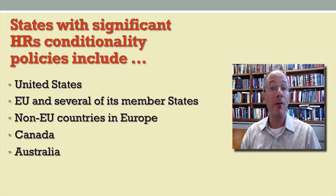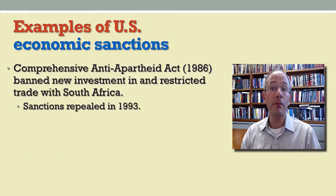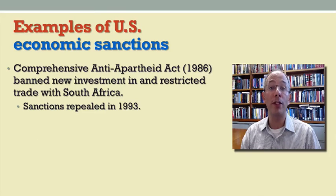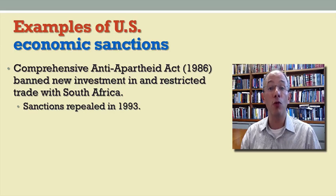Let me give you some examples of different types of conditionality tools, beginning with economic sanctions. Here you see a reference to a statute adopted in the mid-1980s that was intended to pressure the South African government to abandon apartheid. In 1993, with a change to a post-apartheid majority rule in South Africa, those sanctions were lifted.